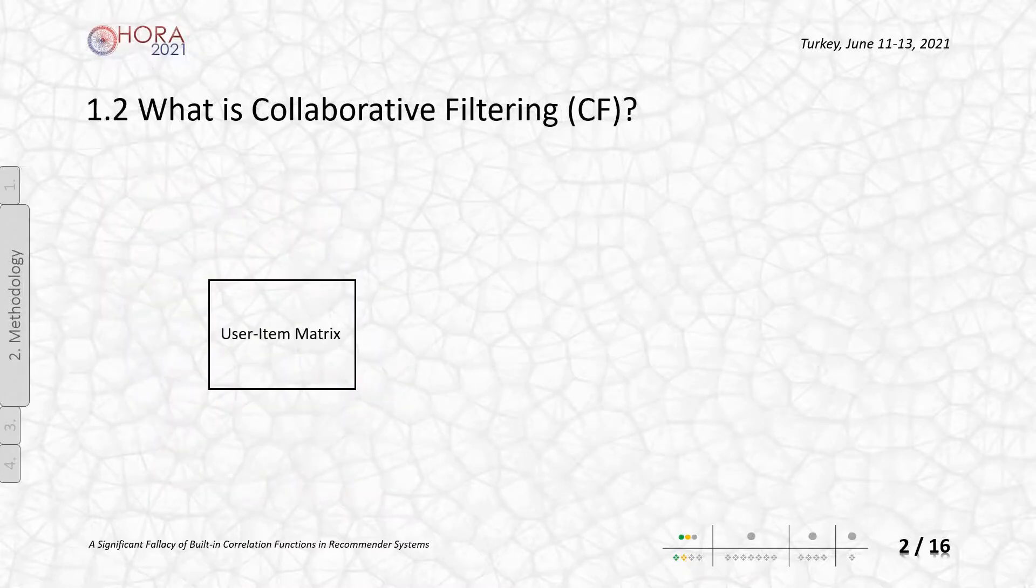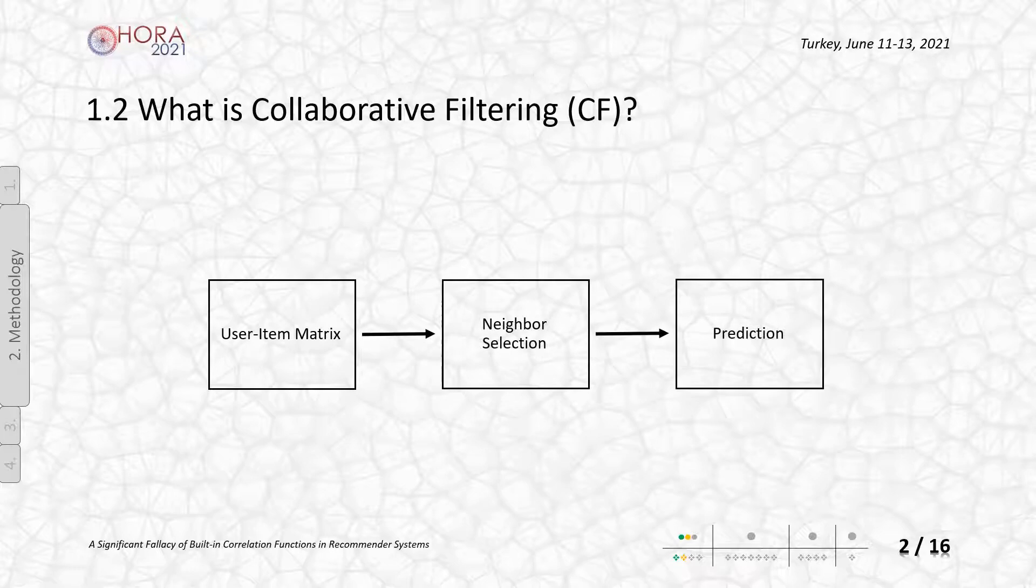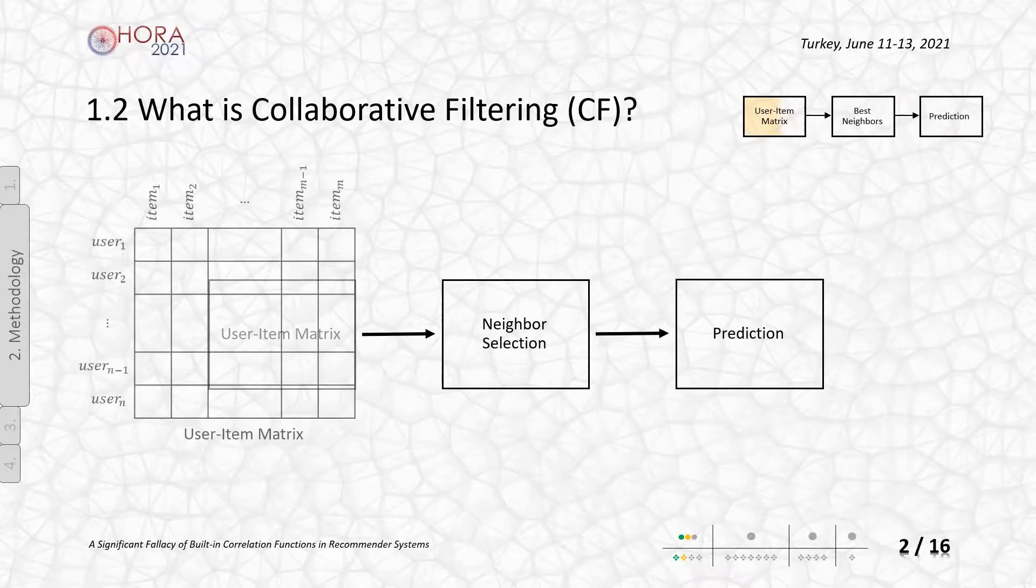In the frameworks of applications, the similarity analysis is performed first. User or item similarities can be computed through the rating matrix. In the user-based collaborative filtering, you can see the algorithm steps in the screen.